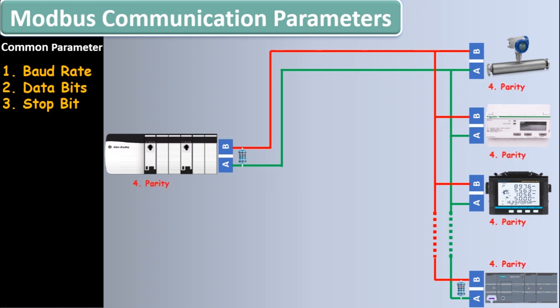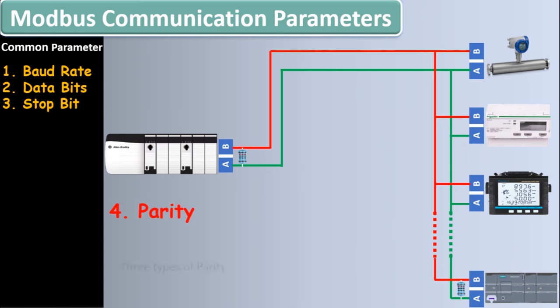The fourth common parameter in RS485 communication is parity. All devices in the same RS485 network must have the same parity. Parity is also a sort of error checking. There are three types of parity: none, odd, or even. Usually none parity is used because the protocol used on RS485 has its own way of checking errors.